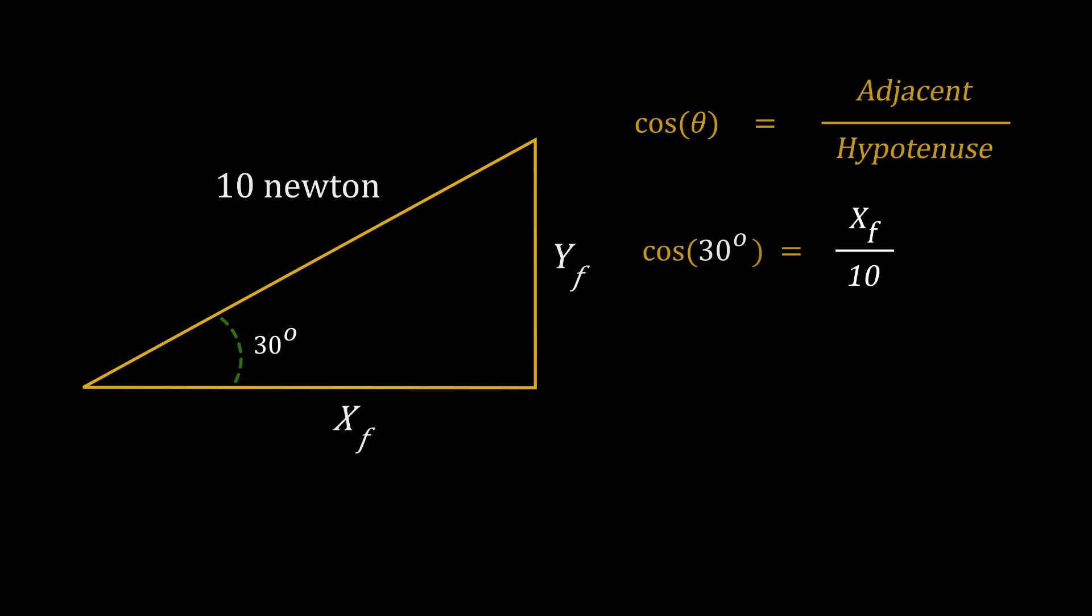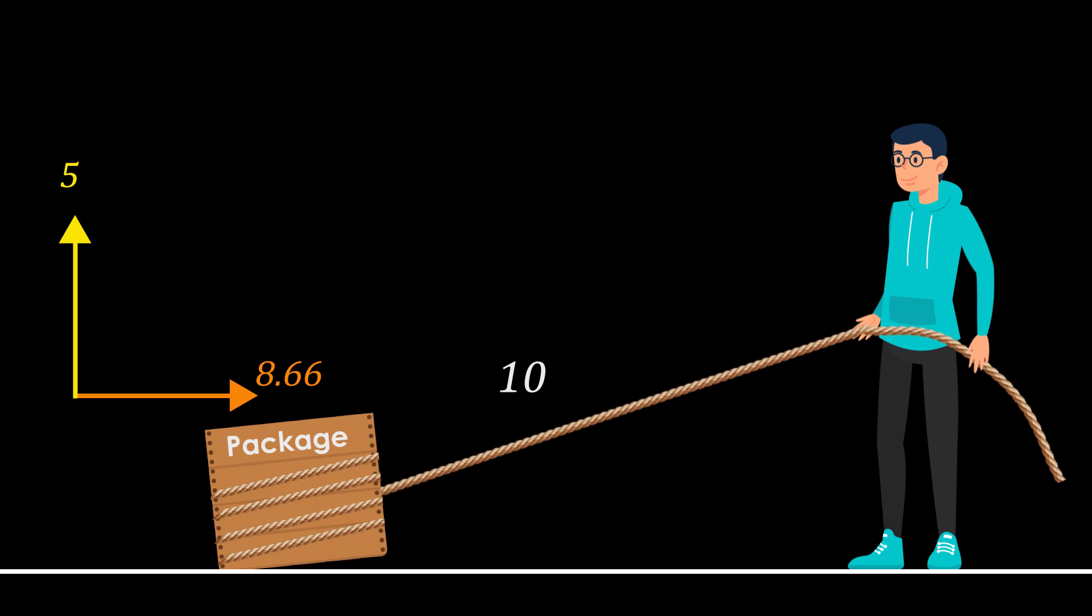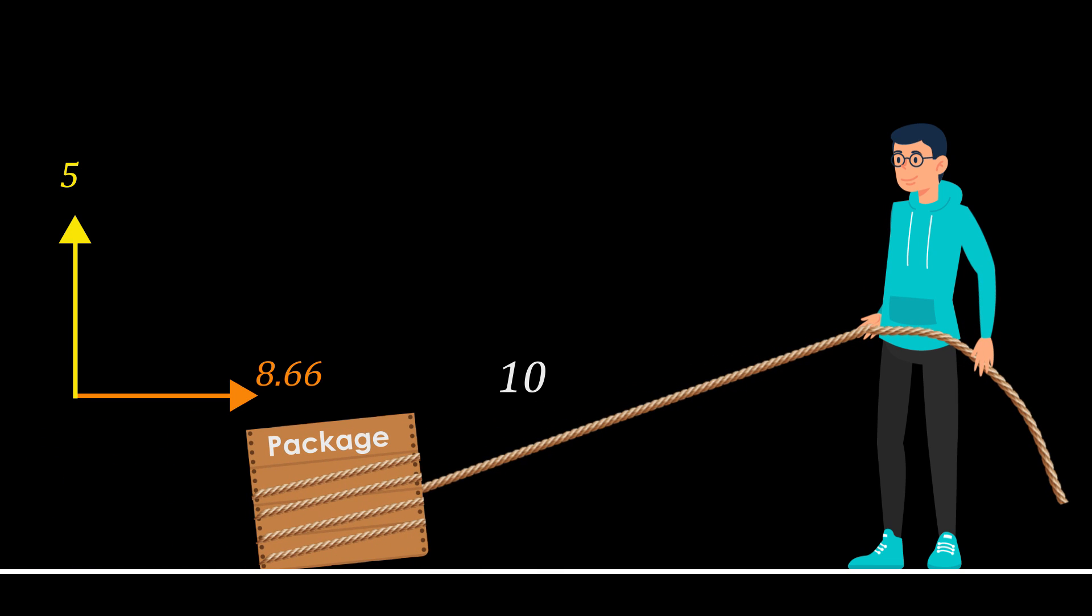That's gonna be cos 30, which is always again 0.866. And that's gonna be 8.66 roughly. So now, if I studied math, sine, cosine, etc., really well during my math class, maybe I will be able to pull or push this package really well.